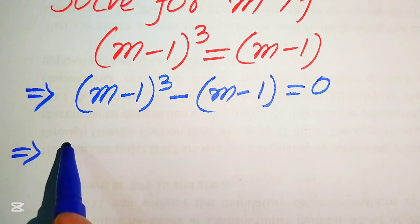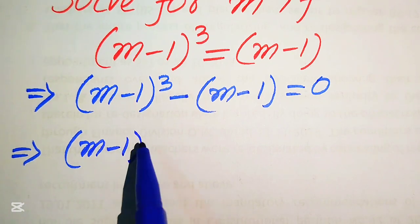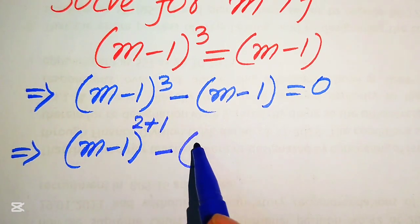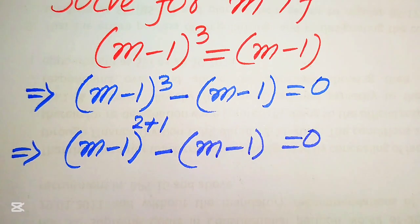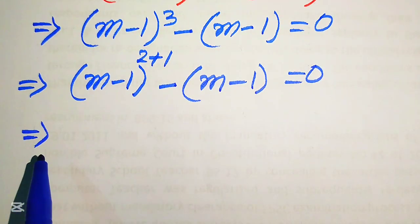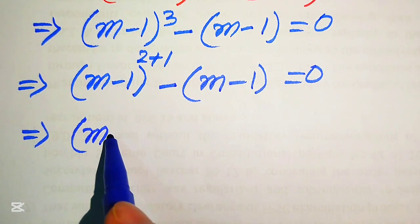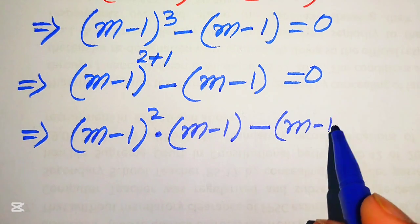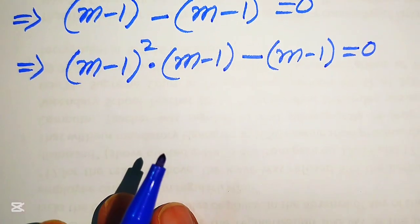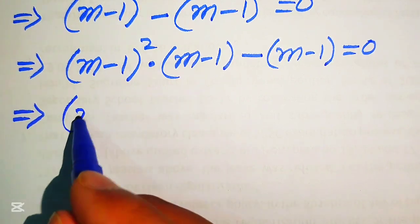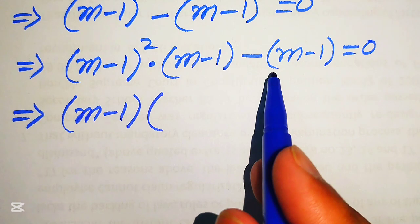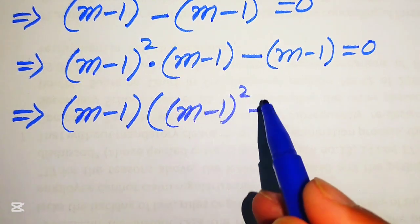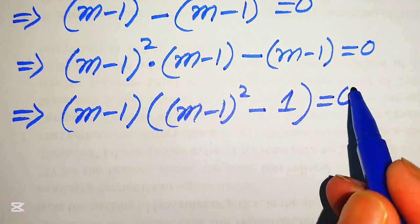In the next step we break (m - 1)³ by rewriting the exponent 3 as 2 plus 1, then apply the exponent law to get (m - 1)² × (m - 1) minus (m - 1) = 0. We then take (m - 1) as a common factor, giving us (m - 1)[(m - 1)² - 1] = 0.